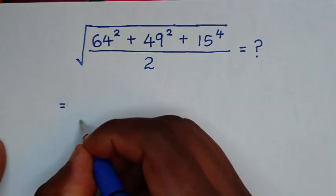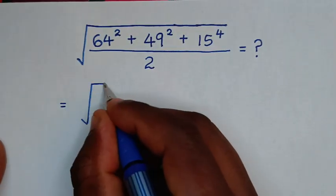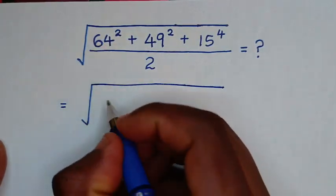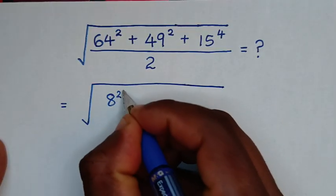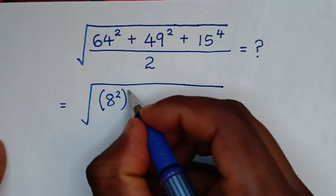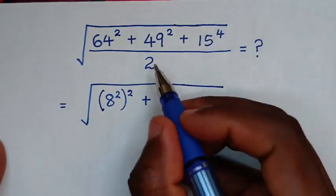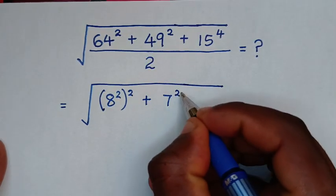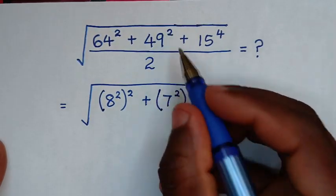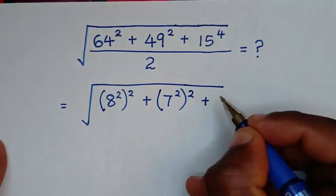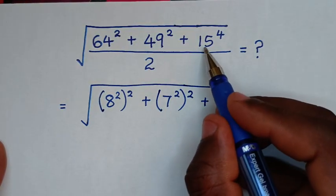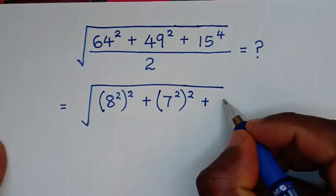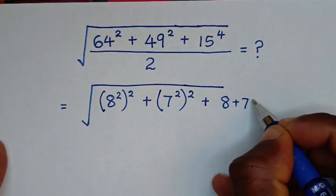It will be equal to the square root of 64 squared — 64 is the same as 8 squared — then bracket this squared, plus 49 squared — 49 is the same as 7 squared — then bracket this squared. And 15 is the same as 8 plus 7.